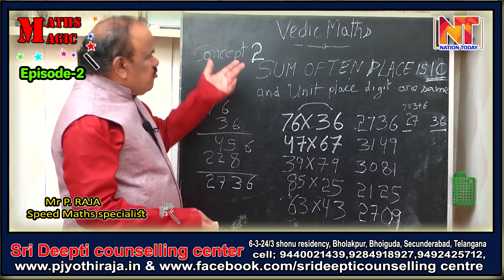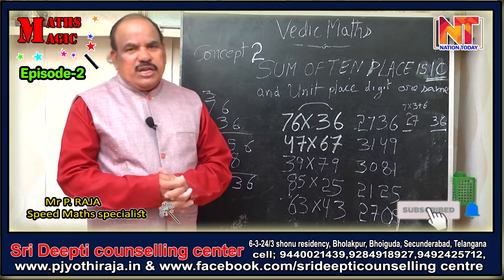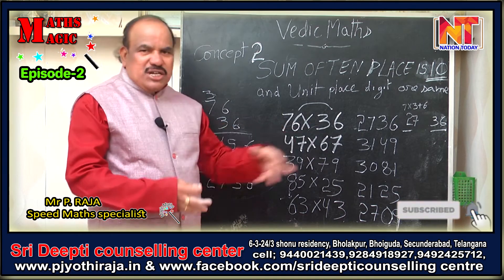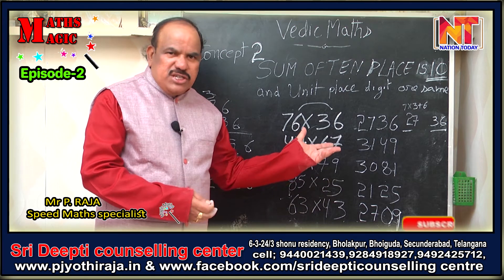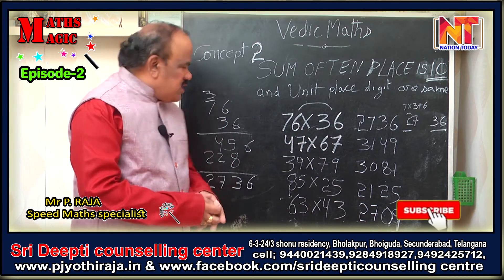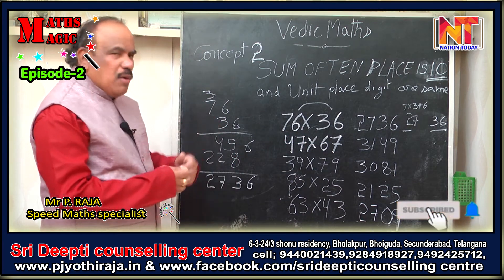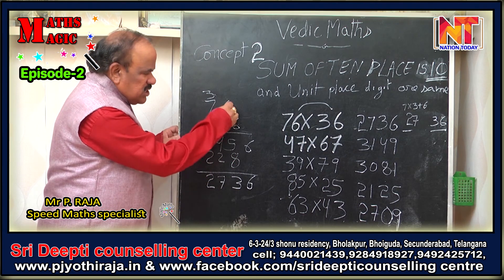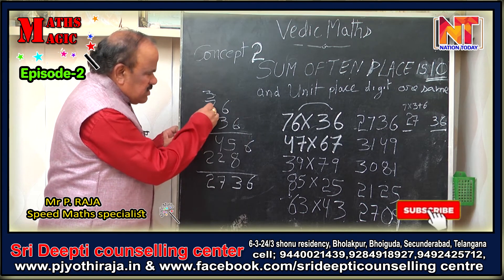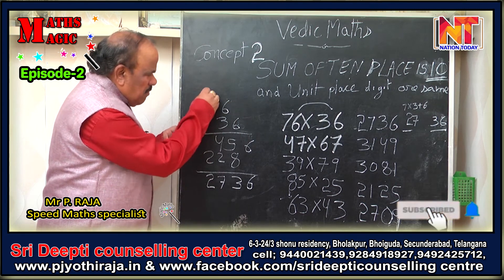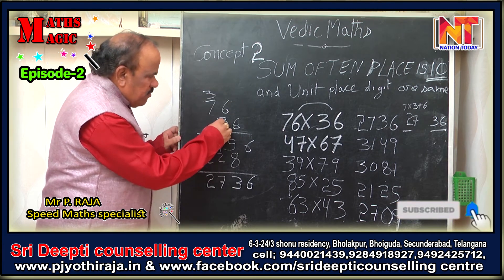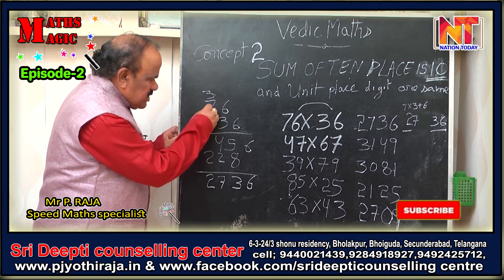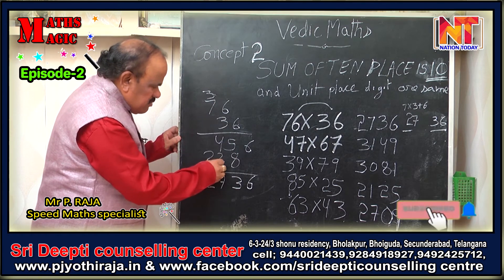Concept 2 is the next technique. If you put 76 into 36 — 76 times 36 — we have a conventional method. 6 times 6 is 36, carry 3. 6 times 7 is 42, plus 3 is 45. 3 times 6 is 18, carry 1. 3 times 7 is 21, plus 1 is 22.